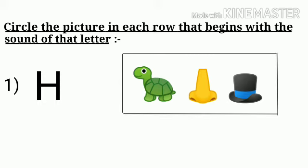Now what's the first sound that we can see? It's H. And what all pictures can you see? It's the picture of a tortoise, nose, and a hat. Now tell me which picture begins with the sound H? It's hat, so you will slowly circle the hat. Yes!